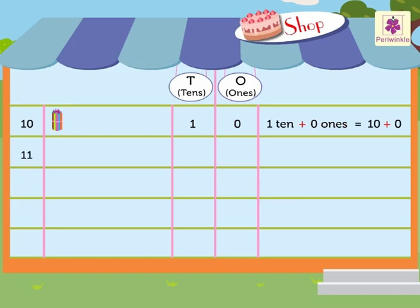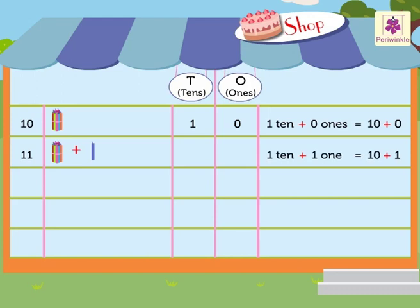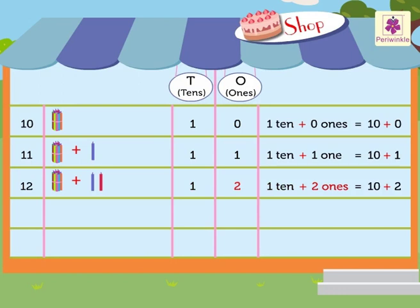Similarly, 11 is also a two-digit number; it is written in the tens and ones column. It has one ten and one one. We place the one of the one ten in the tens column and the one of the one one in the ones column. Number 12 has one ten and two ones; we place the one of the one ten in the tens column and the two of the two ones in the ones column.